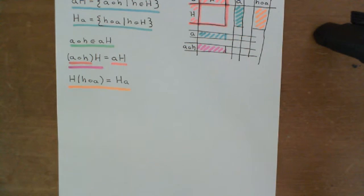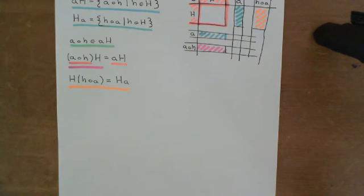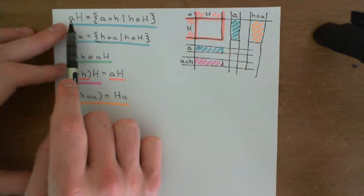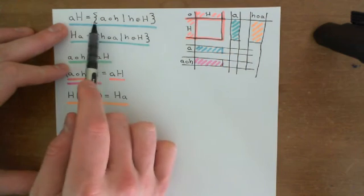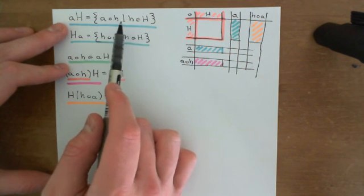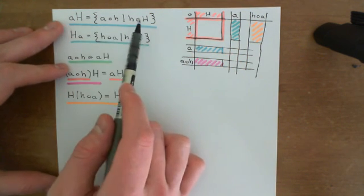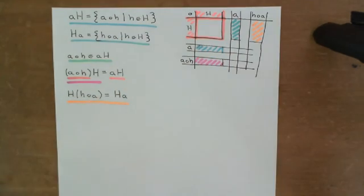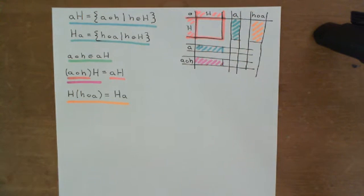So the nice way of saying this is that you can use any element of the coset to generate the same coset. The choice of using little a to generate this coset was arbitrary. We could have used any of the elements in this coset to generate that same coset. All of the elements in here are kind of related to one another — we could have used any of them to generate this same coset. That's a very nice thing about cosets.